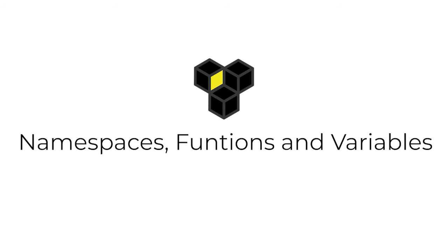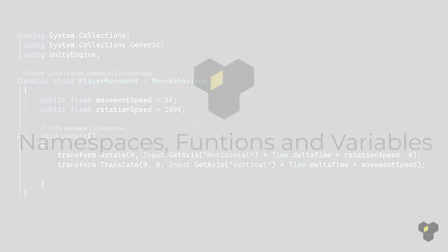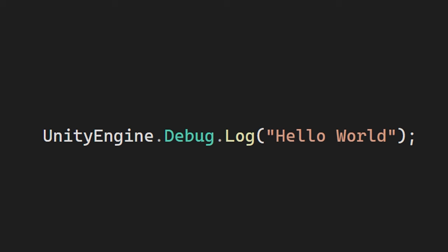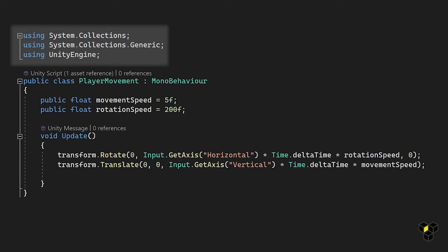This lecture is optional as it's just a code explanation, but I highly recommend watching if you're new to programming or didn't understand everything in the previous video. Let's take a look at our movement script, starting with the namespaces. The using keyword allows us to use other classes. For example, here we write 'using UnityEngine'. This saves us time when we want to use a function from that namespace. Without the namespace, to log some text we'd have to write UnityEngine.Debug.Log, but with it we can simply write Debug.Log.